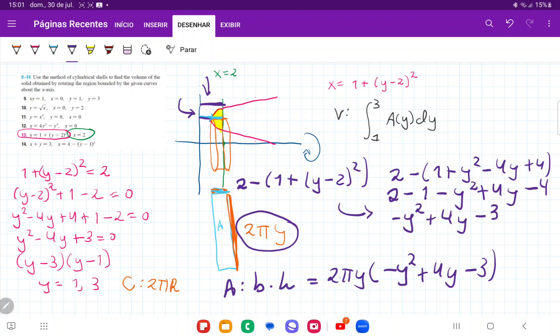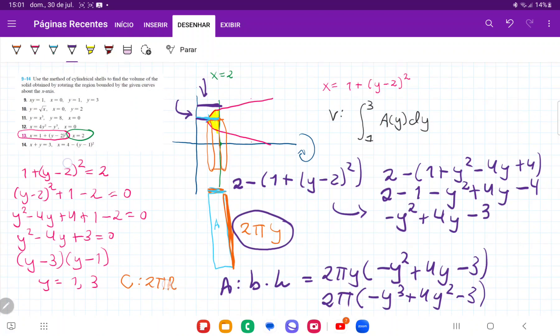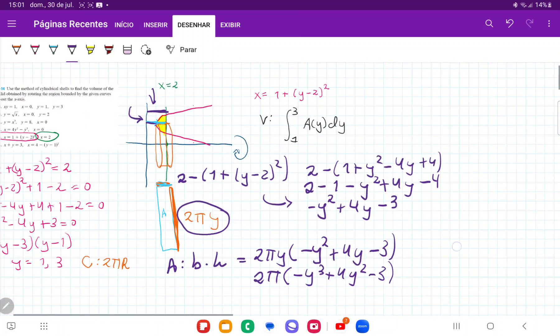The base is 2πy, which is equal to 2πy times the height, which is -y² + 4y - 3. Once we have this, let me distribute that y and leave out the 2π because it's a constant so it's easy for us to integrate. So that's -y³ + 4y² - 3y. So once I have this, I have an expression for my area. Once I have an expression for my area, I can now put it inside the integral. Therefore, the volume is going to be the integral from 1 to 3 of A(y), and A(y) is this. So 2π goes outside, and that gives us -y³ + 4y² - 3y, all of this times dy.